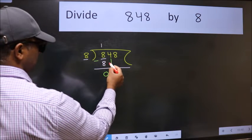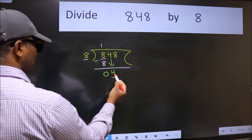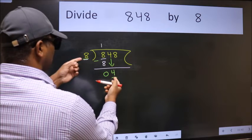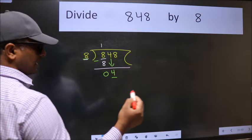After this bring down the beside number. So 4 down. Now here we have 4 and here 8. 4 is smaller than 8, so we should bring down the second number.